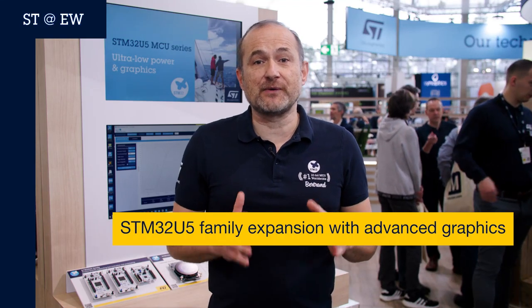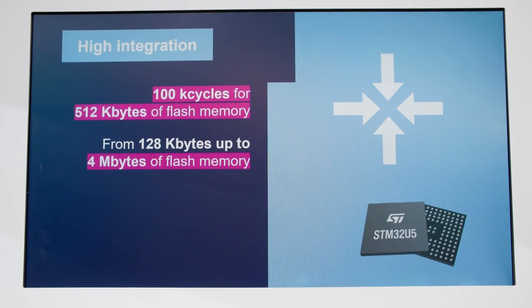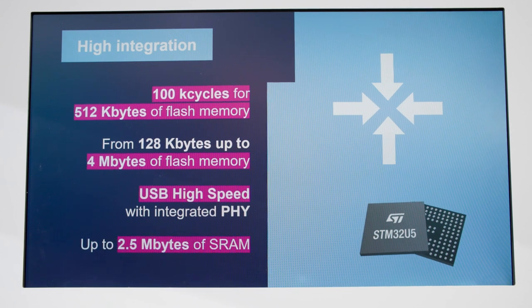Are you looking for a microcontroller with a memory range which is the widest on the market? You have it with the STM32U5, which is now available with flash going from 128KB up to 4MB. On top of which, you can get up to 2.5MB of SRAM, and of course across a lot of packages which are all pin-to-pin compatible.